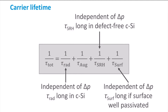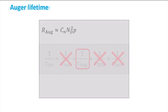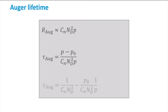Finally, the lifetime associated with surface recombination is also independent of the injection level and does not need to be taken into account when looking at the injection level dependence. We are left with the lifetime for Auger recombination. For the Auger recombination mechanism, the rate is given by a specific expression, and if we calculate the lifetime we obtain an expression with a clear dependence on the carrier concentration.